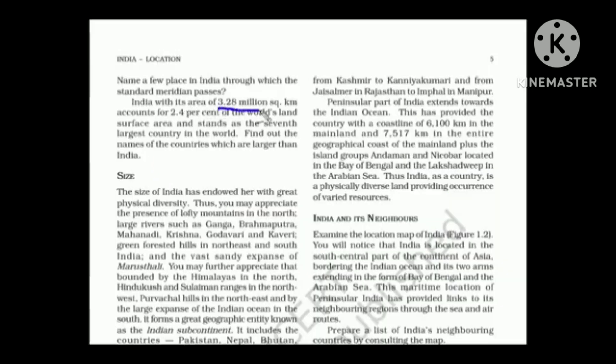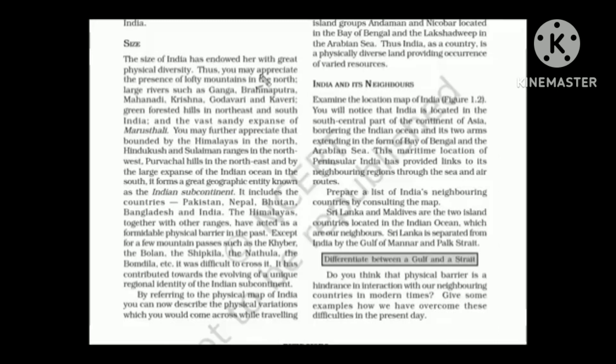Now India has an area of 3.28 million square kilometers. The share of land that we have when compared to world is 2.4% and that gives us the seventh position in the world. India is a land of great physical diversity. We have big mountains, large rivers, huge green forests and a vast sandy desert.